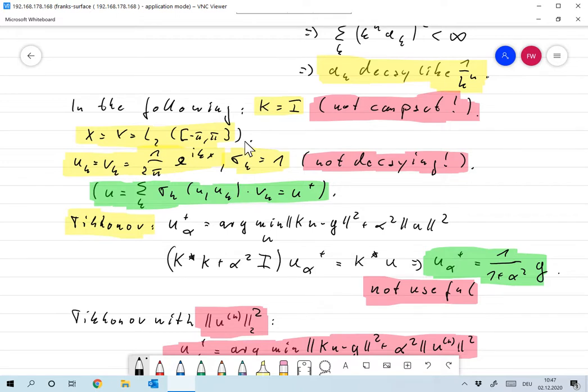Let's write something that's very close to a singular value decomposition. We take x equal to y, so that's l2 of minus pi pi. We take u k and v k as e to the i k x times one over square root two pi. That's now an orthonormal system. If we set sigma k equal to one we find that u is the sum of all k sigma k u and u k times v k. That looks very much like a singular value decomposition but it's not because the sigma k should converge to zero but they don't, they're all constant at one.